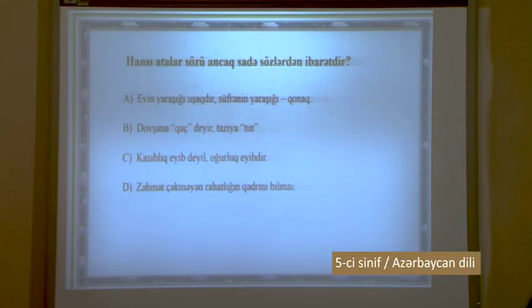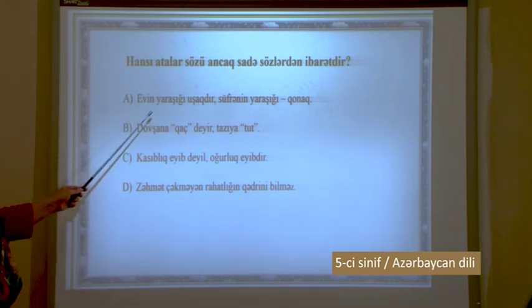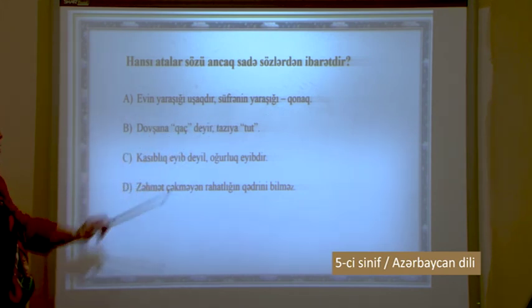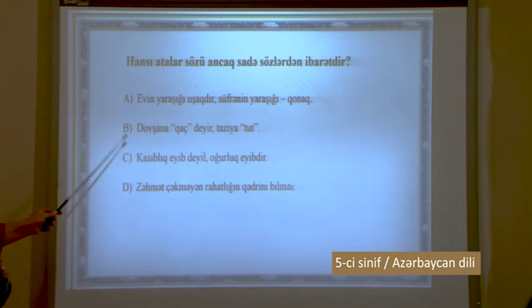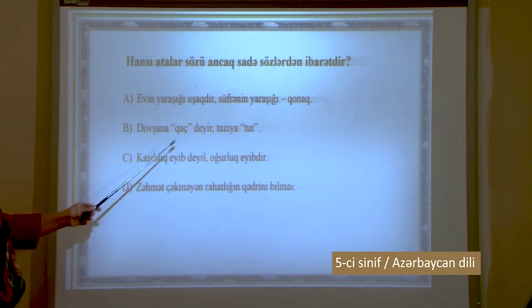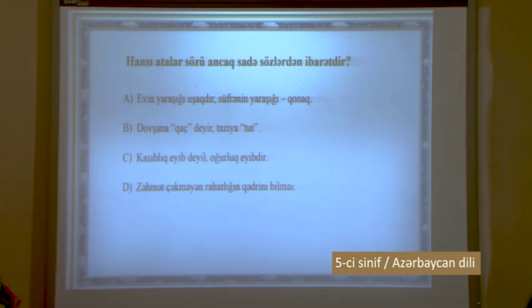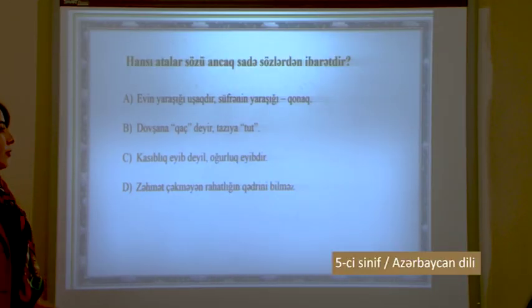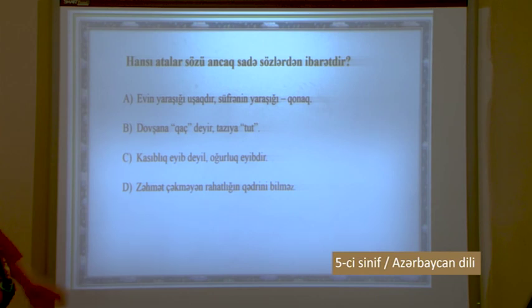Hansı atalar sözü ancaq sadə sözlərdən ibarətdir? A: 'Evin yaraşığı uşağıdır, süfrənin yaraşığı qonaq' - 'yaraşıq' sözü quruluşça düzəltmədir. C: 'Kasıblıq eyib deyil, uğurluq eyibdir' - 'kasıblıq' düzəltmədir. D: 'Zəhmət çəkməyən rahatlığın qədrini bilməz' - 'rahatlığın' düzəltmədir. B: 'Dovşana qaç deyir, tazıya tut' - dovşan, qaç, deyir, tazı, tut sözlərinin hamısı quruluşça sadədir. Cavabımız B variantıdır.